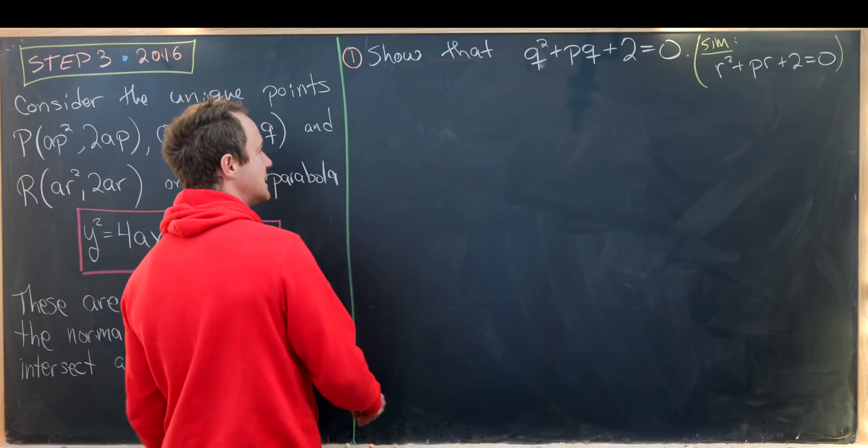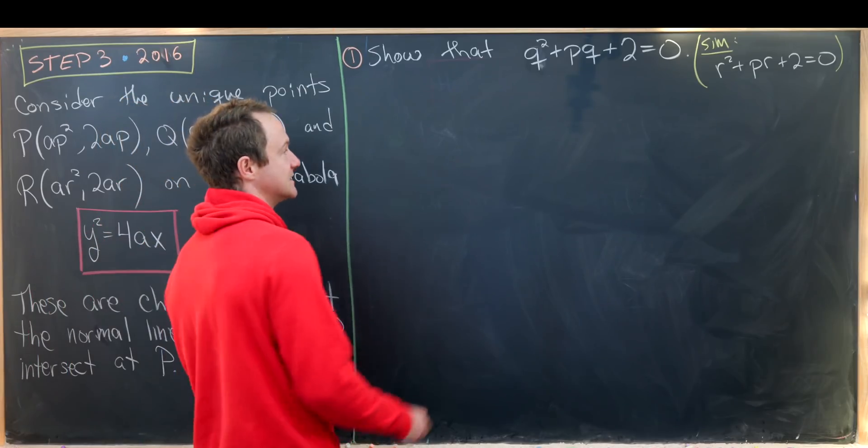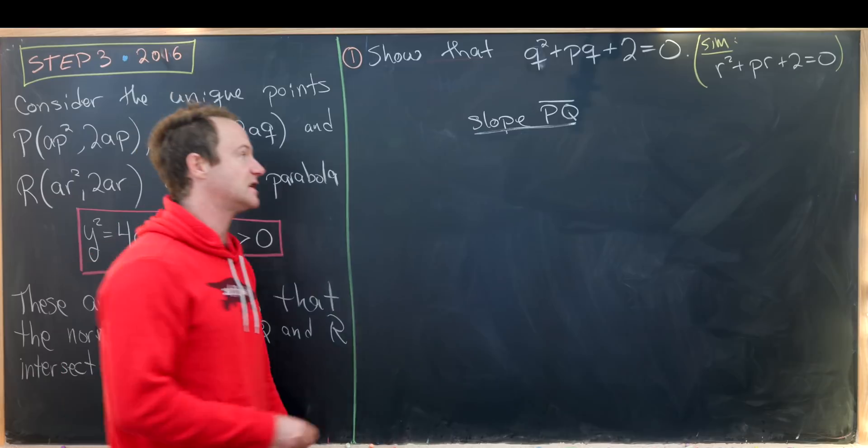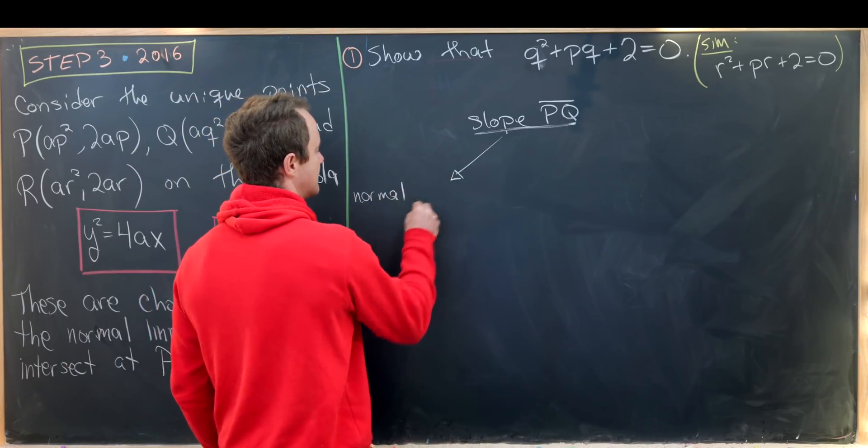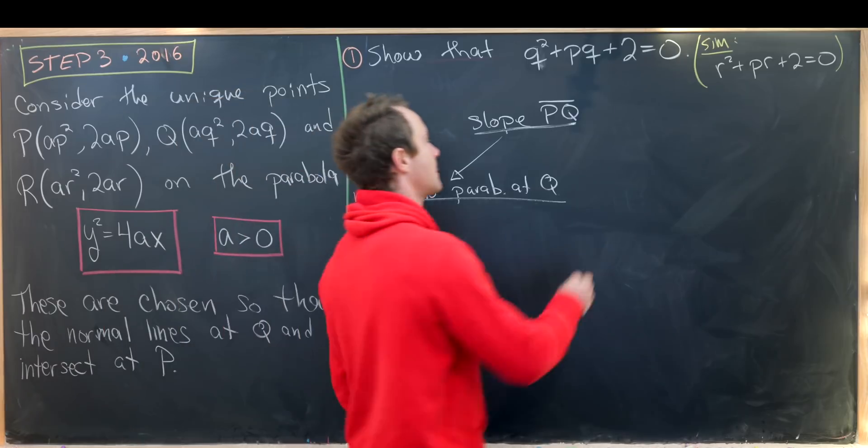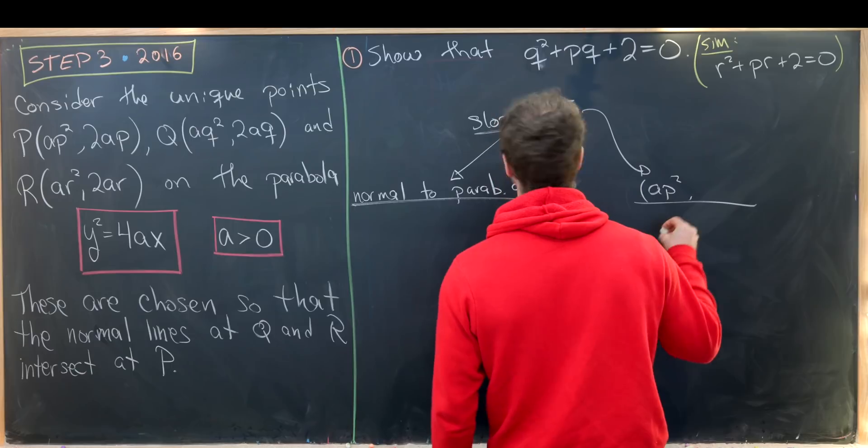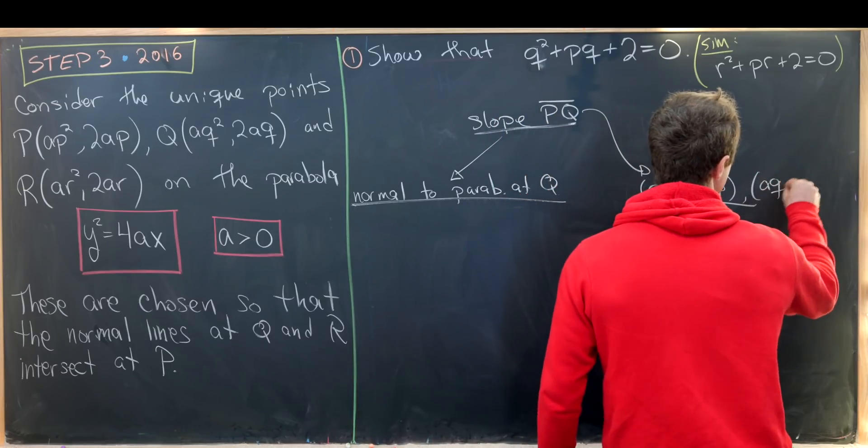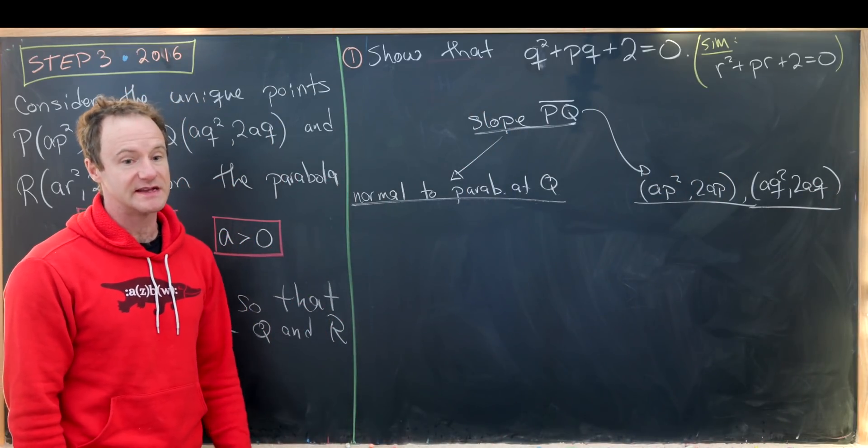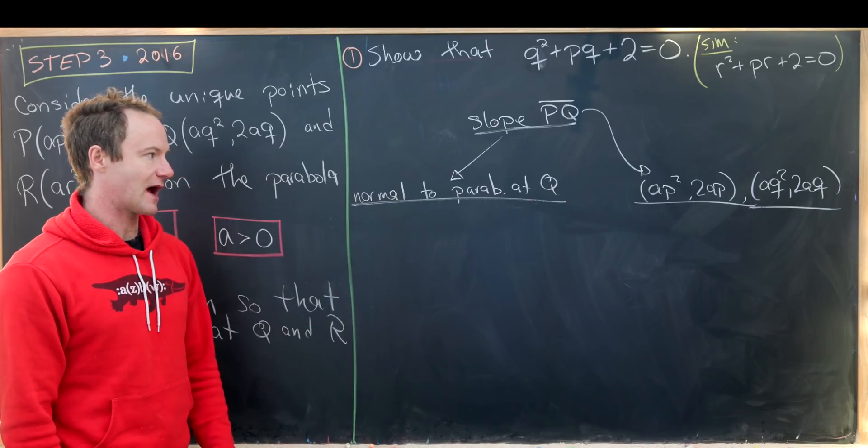So let's dive into this. First of all we need to measure the slope of the line going between P and Q different ways. So the slope of line PQ can be found two ways. On the one hand it's normal to the parabola at Q. And another thing that we know is it goes through two given points, (AP², 2AP) and (AQ², 2AQ). Using these two facts we can calculate this slope two different ways giving us an equation which will hopefully reduce to this quadratic.